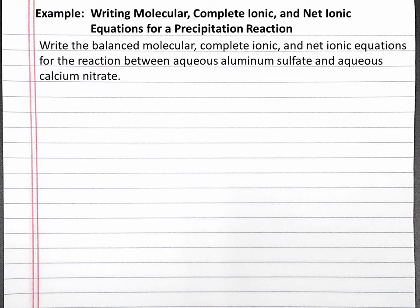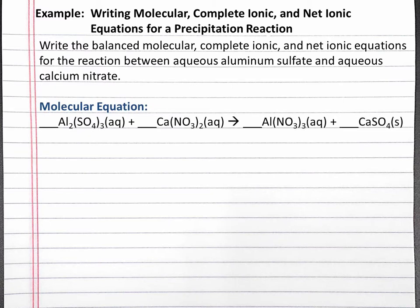We'll start by writing the molecular equation. This is going to be a precipitation reaction. Aqueous aluminum sulfate will react with calcium nitrate to produce aqueous aluminum nitrate and solid calcium sulfate. In this precipitation reaction, when we switch the cations and anions in these ionic compounds, calcium sulfate is insoluble, so that is the precipitate.